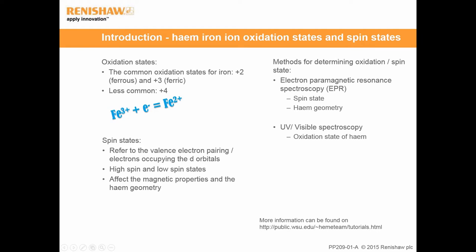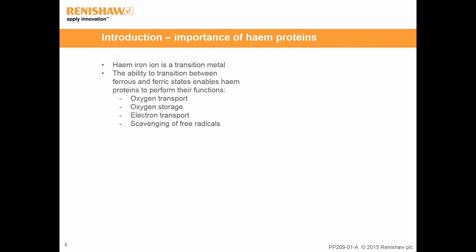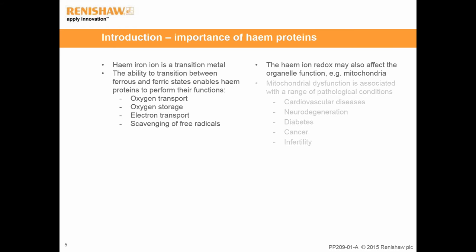Electron paramagnetic resonance spectroscopy, for example, can be used to determine the spin state. UV-visible spectroscopy can be used to determine the oxidation states of heme. These methods, however, cannot be applied to heme in organelles, cells or tissues in situ. The functions of heme proteins such as myoglobin, cytochromes and hemoglobin rely on the reduction-oxidation, or redox, of the heme. Heme protein functions include oxygen transport and storage, electron transport and scavenging of free radicals. To study the functionality of heme proteins, we need to be able to detect their presence and elucidate their heme oxidation state.